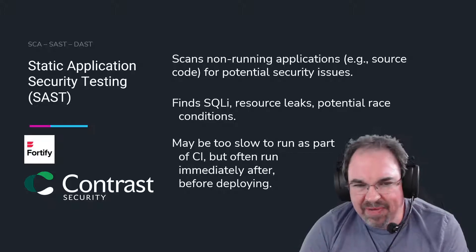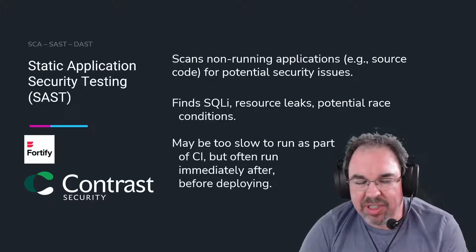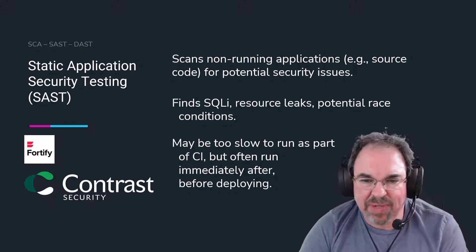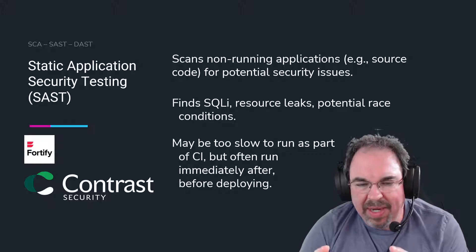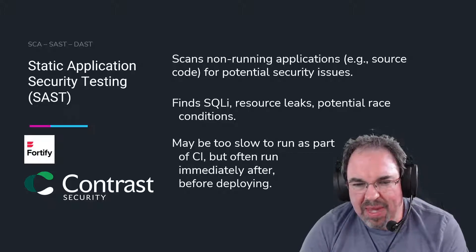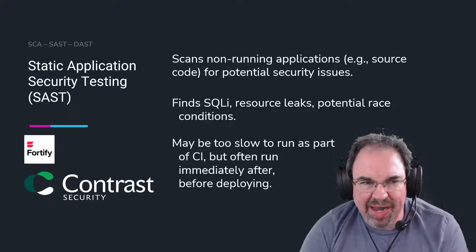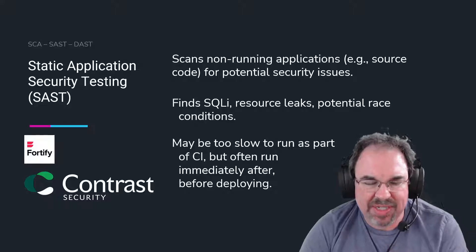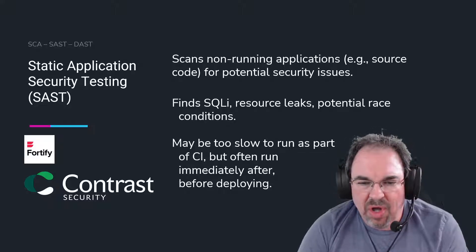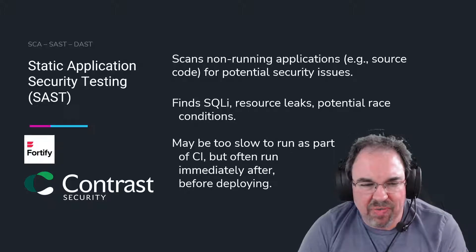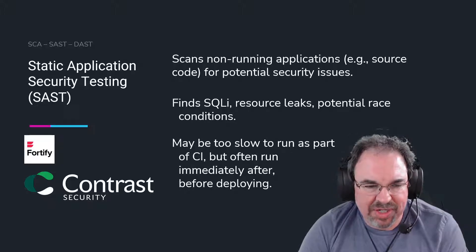These tools tend to find a lot of false positives, at least traditionally, although a lot of tools have gotten much better about that, sometimes by combining with other types of testing. They may also be too slow to run as part of CI — they can take 15, 20, or 30 minutes to run against big code bases. So often we'll run them right after we complete our continuous integration cycle, but before we do a deploy.